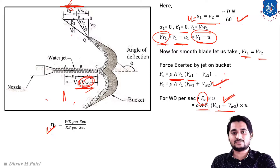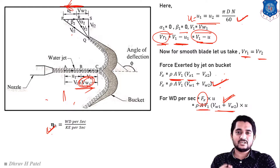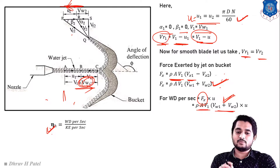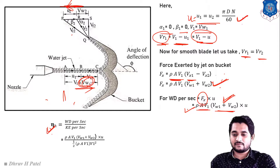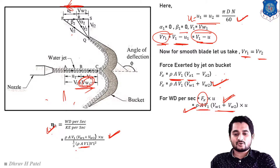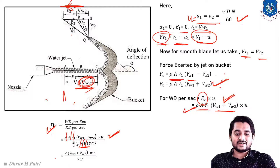Hydraulic efficiency = output / input = work done per second / kinetic energy per second. So efficiency = ρAV1(VW1 + VW2)U divided by (1/2)ρAV1²). After cancelling ρAV1, hydraulic efficiency = 2(VW1 + VW2)U / V1².